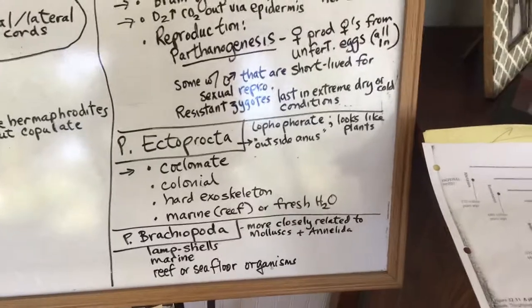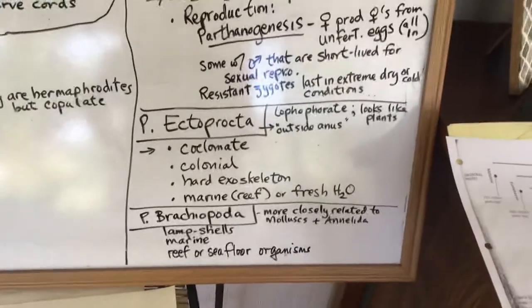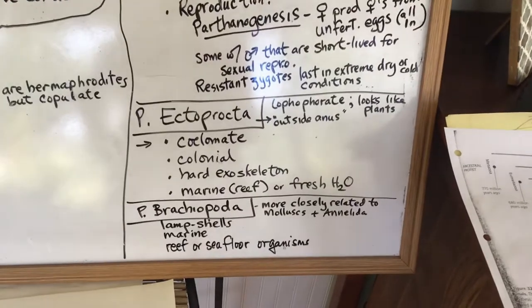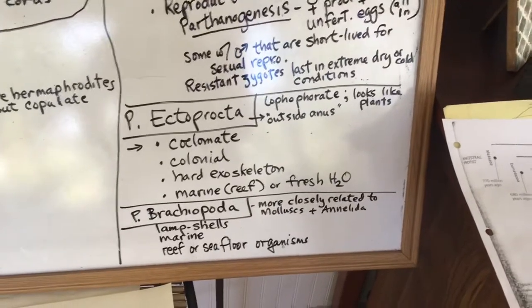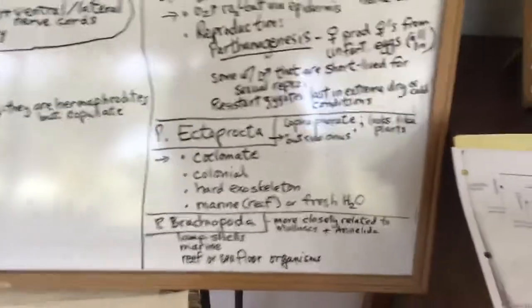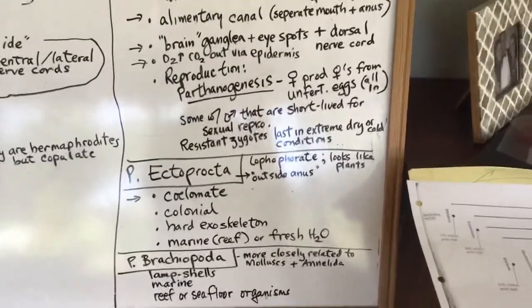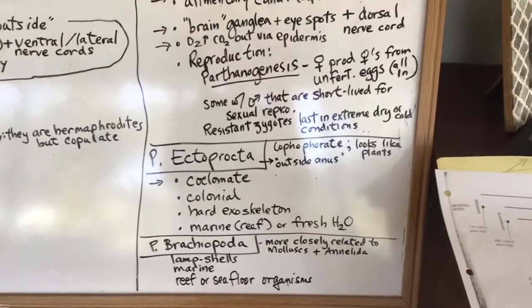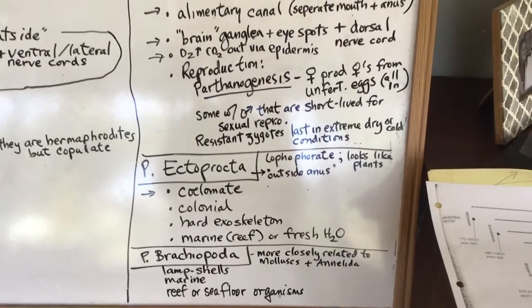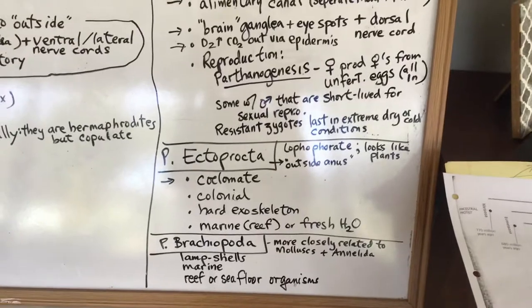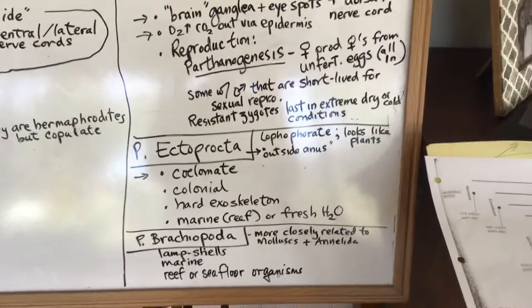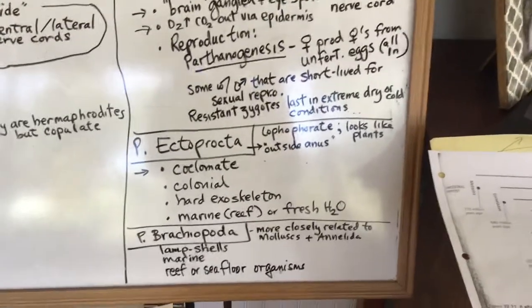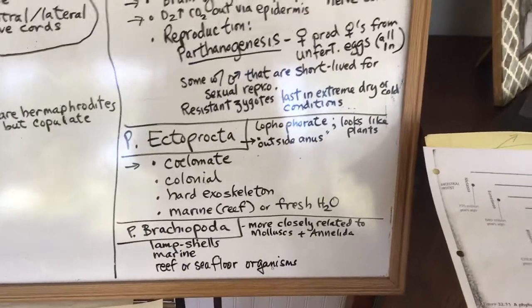The next two phyla won't be covered in depth — just a mention. Ectoprocta actually looks like a plant because their lophophores stick up and hang out. They are marine and colonial, often seen as part of a reef or attached to the ocean floor, though some can be in fresh water. Importantly, these are coelomates — the first time we see a true coelom — which is why this group is worth mentioning.